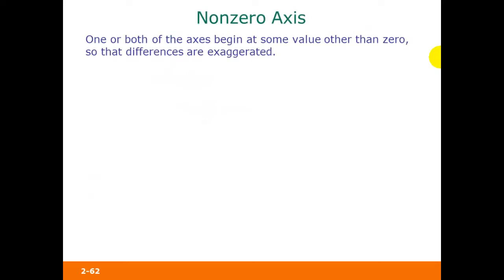A non-zero axis means that one or both of the axes begin at some value other than zero, so that the differences are exaggerated.